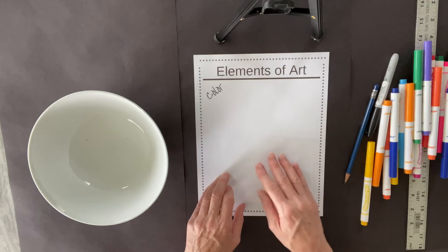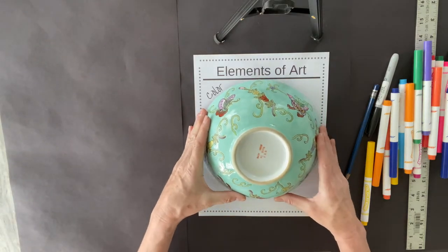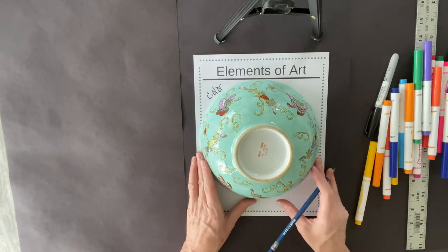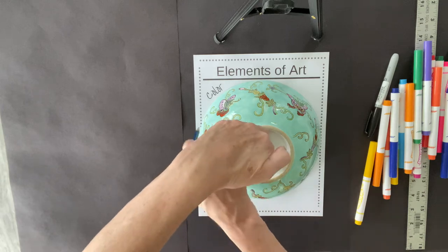Now, you need a circle, and I'm just going to use a bowl that I have in my kitchen. I'm going to put it upside down, and I'm going to use a pencil to trace my circle all the way around.